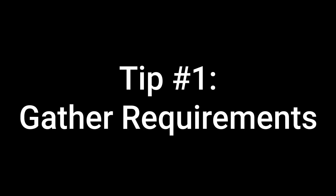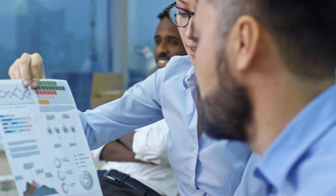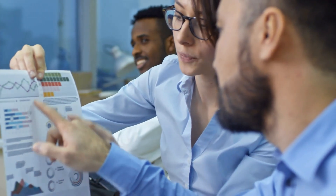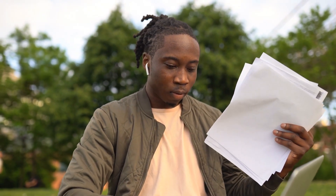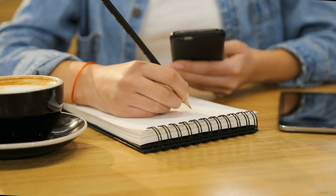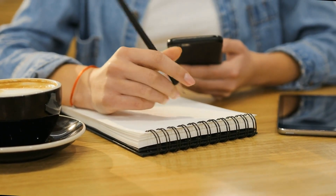Tip number one is gathering the requirements. Engineers frequently just jump into solving the solution, drawing the boxes, connecting them with arrows and so on. However, the big problem is that there is a high chance that you're solving the wrong problem. After you get the initial description of the problem, don't jump to the solution, but spend 10 minutes gathering the requirements.